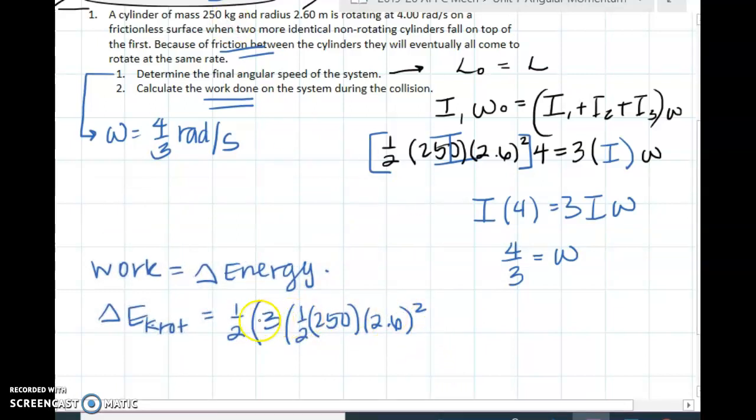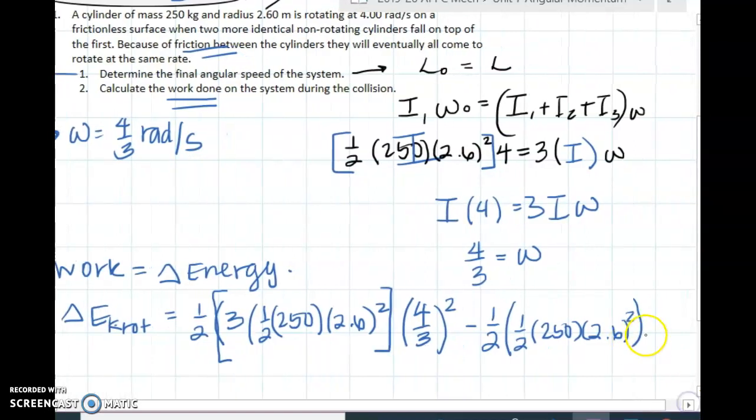So this one half, and this is I, and then omega squared will be the four thirds squared, minus one half just one disc, which would be one half times 250 times 2.6 squared, all times 4.6 squared. So remember that's going to be your rotational energy, which is the one half I omega squared.